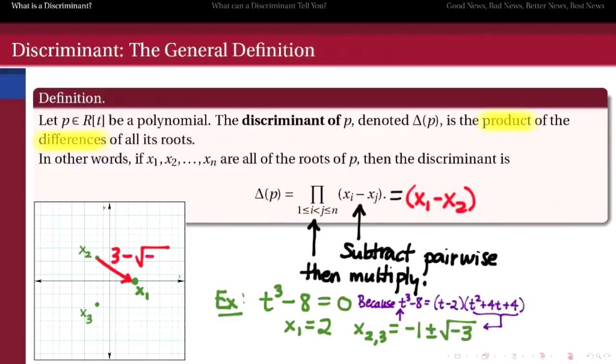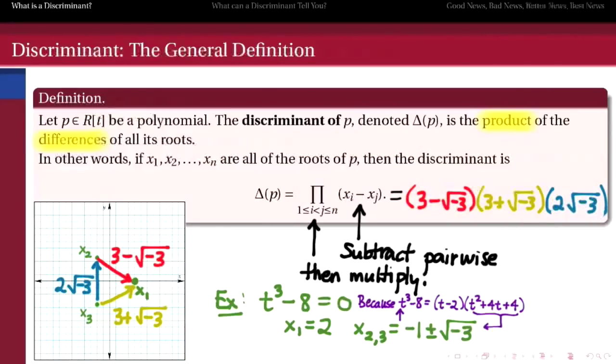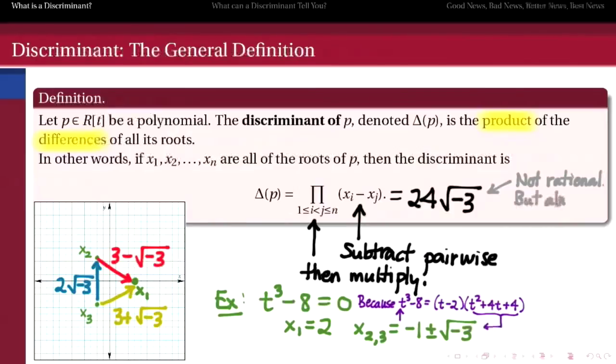But what's the discriminant of t cubed minus 8? It's what we get by subtracting these roots pairwise. And when you subtract numbers in the complex plane, what you're really getting are these vectors that point from one to the other. So we can subtract those pairwise and then multiply them all together. And once we do all of that, the discriminant of this cubic is 24 square root of negative 3. So it's not a real number. It's not even a rational number, but somehow it's almost rational in a sense that we'll come to appreciate over the course of this video.